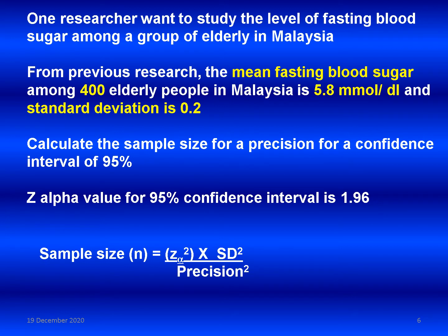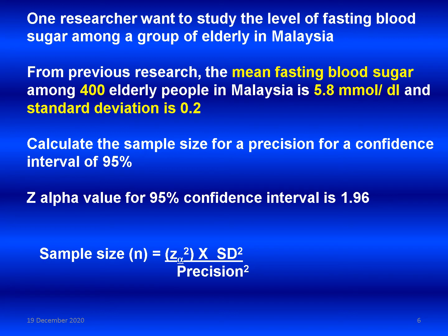Now we can go through some practical scenarios. One researcher wants to study the level of fasting blood sugar among a group of elderly in Malaysia. From previous research, mean fasting blood sugar among 400 elderly people in Malaysia is 5.8 mmol per deciliter and standard deviation is 0.2. We need to calculate sample size for a 95% confidence interval.